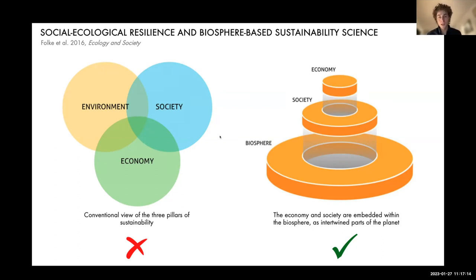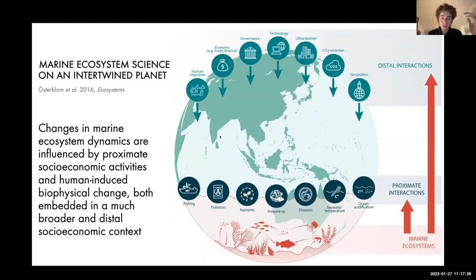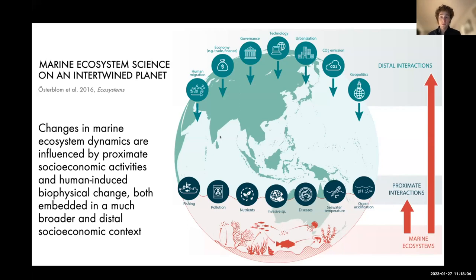This can be projected onto the SDGs — with SDGs most linked to the biosphere, like SDG 14, clean water, and climate action, forming the foundation. Another way to think about this is in terms of proximate and distal interactions: how changes in marine ecosystems are influenced by proximate socioeconomic activities — fishing, pollution, invasive species — all embedded in a broader context of human migration, finance, subsidies, trade, governance, and technology.